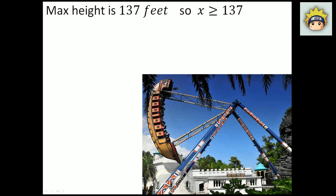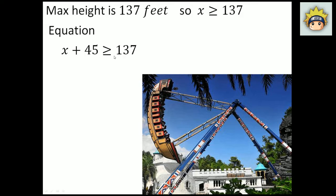Thinking in terms of our inequality, x — which is the maximum height — has to be less than or equal to 137 because 137 is the maximum value, and the ride can take that value, so it is less than or equal to. The inequality should be x plus 45 is less than or equal to 137. Subtract 45 from both sides and you get x is less than or equal to 92. So after it covers 45 feet, it can only go up 92 more feet because the maximum height is 137.